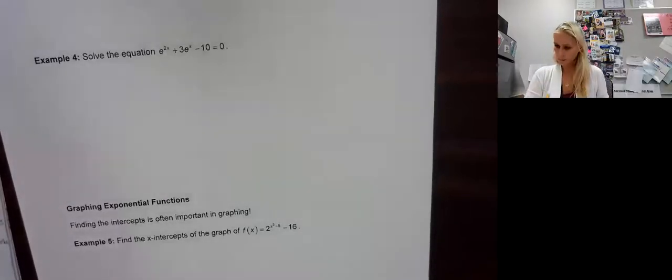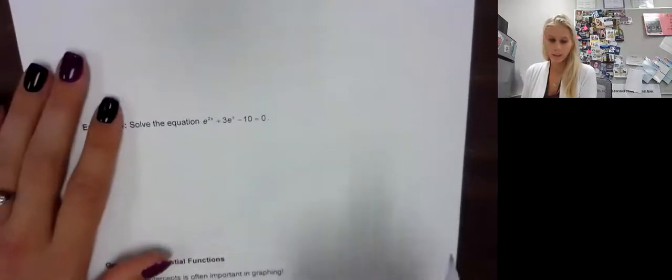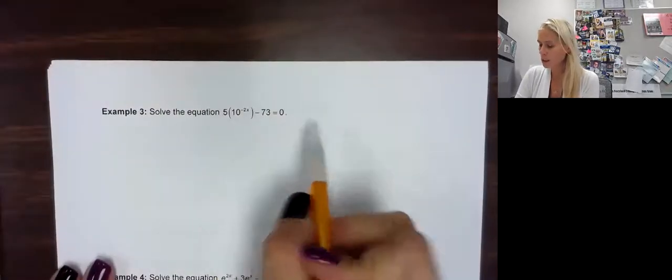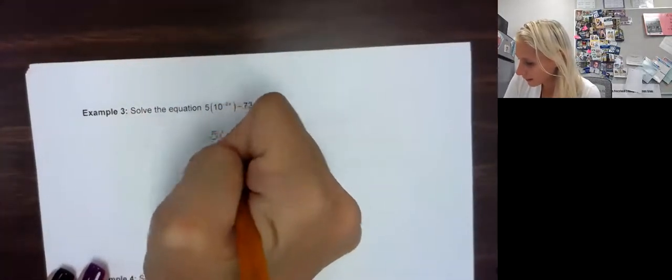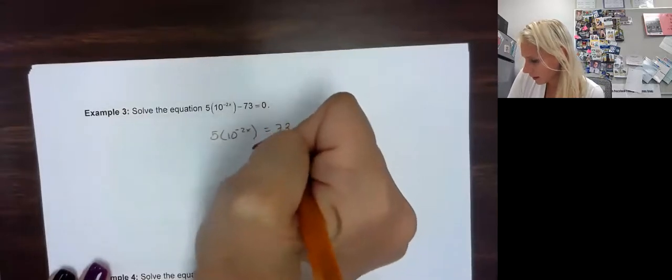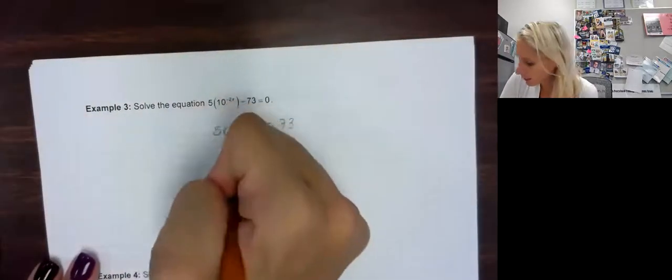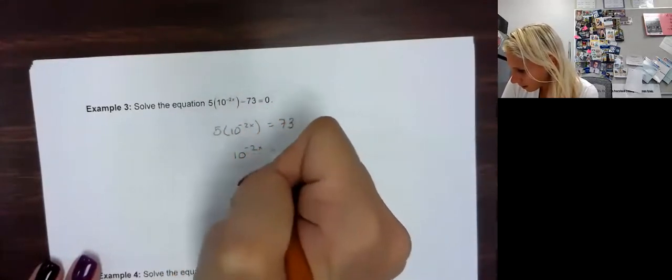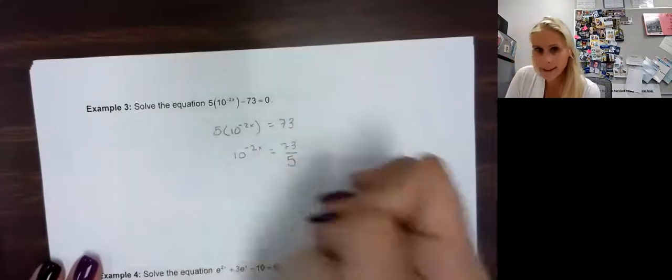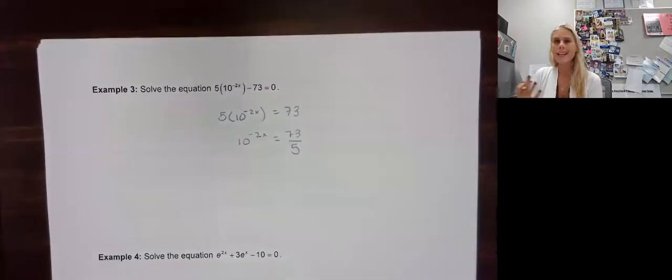Alright, solve the equation. First thing I want to do, because I want to make sure that our bases are the same as everything, is actually move this constant over. So we're going to have 5 times 10 to the negative 2x equals 73. And I want to get rid of that 5. It's multiplying, so we're going to divide both sides by 5. Yes, we get a fraction. Guess what? Who cares? They exist. We need to get used to them. Now in this case, we can't get our bases to be the same.